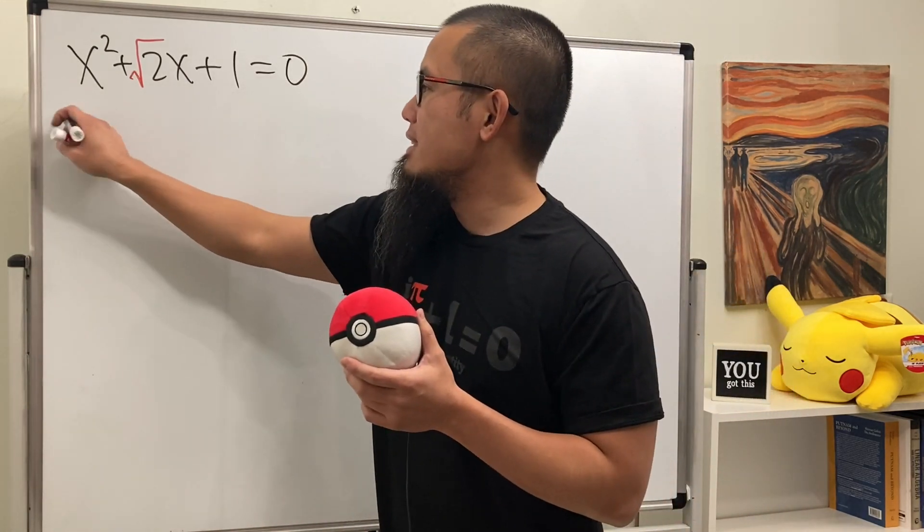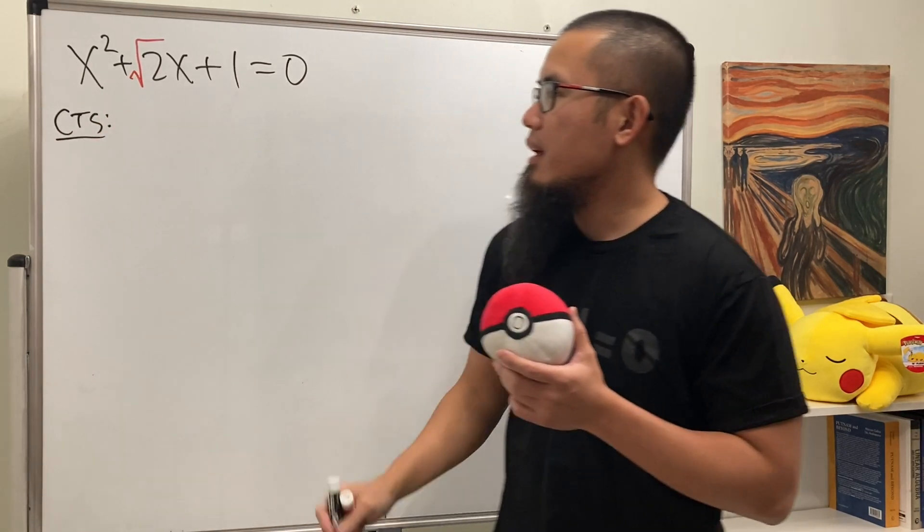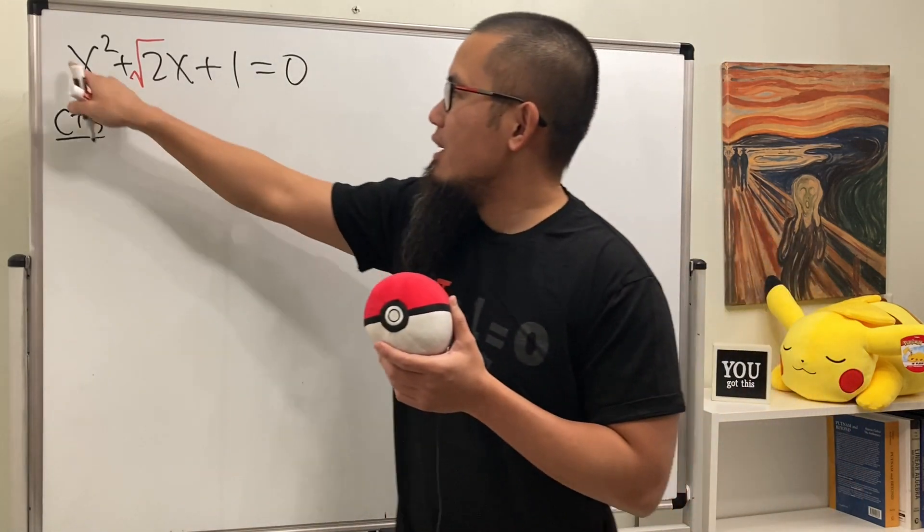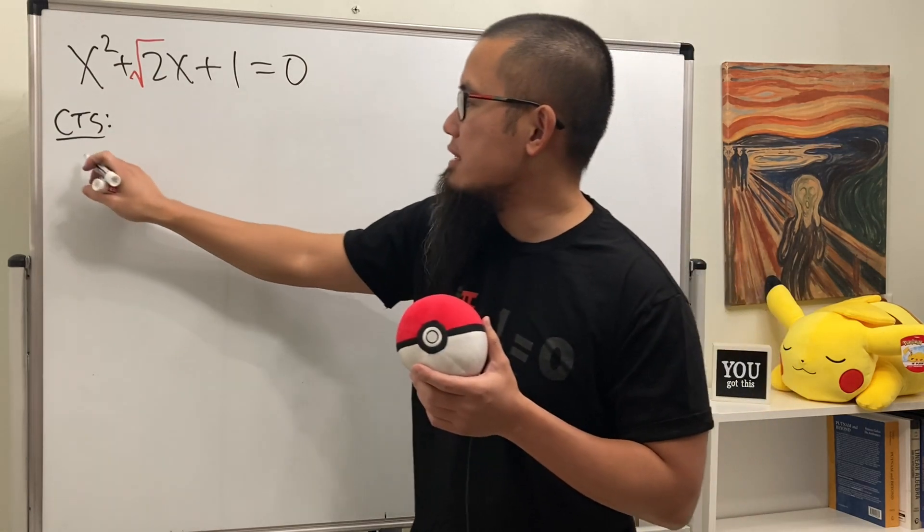Here we go. CTS for completing the square. This is not tau, this is the T. And this is how we do it. First, make sure we have a 1 in front of the x squared. We do. So keep these two terms on the left-hand side.